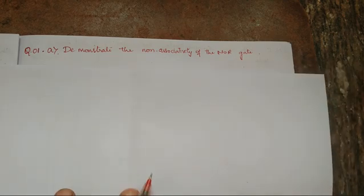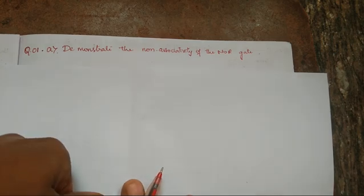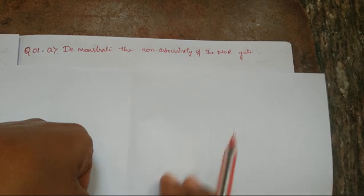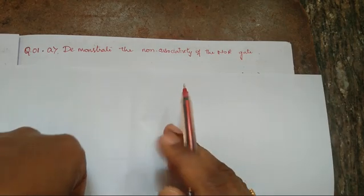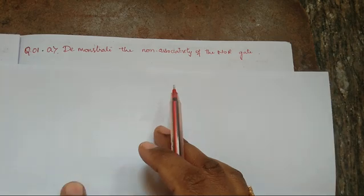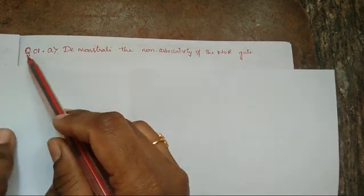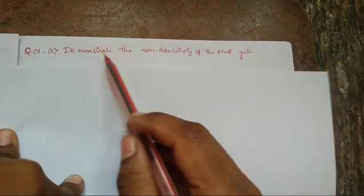Welcome to Vinuta's Math channel. In this video I am going to discuss the solution of the module question paper uploaded on the VTU website for the subject DDCO, that is Digital Design and Computer Organization. The subject code is BCS302. Here I have taken the first question and the first sub-question A.